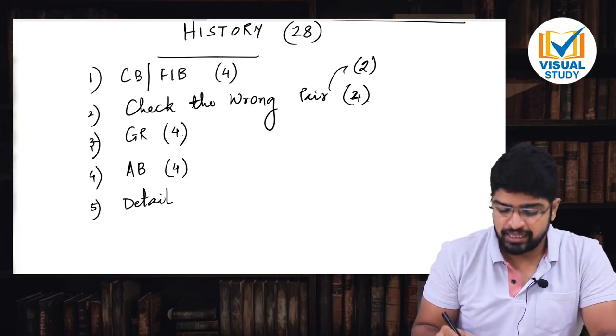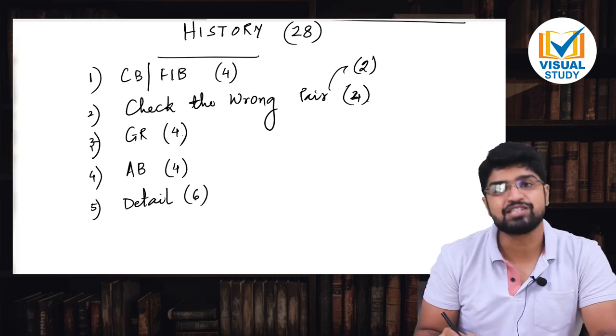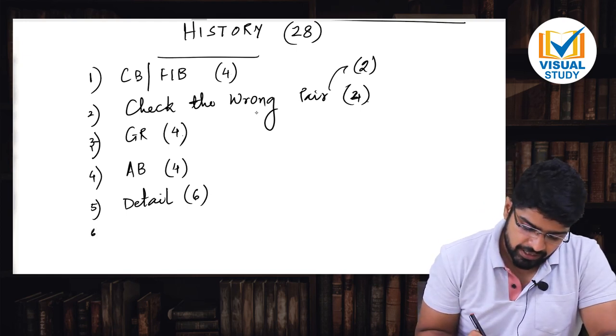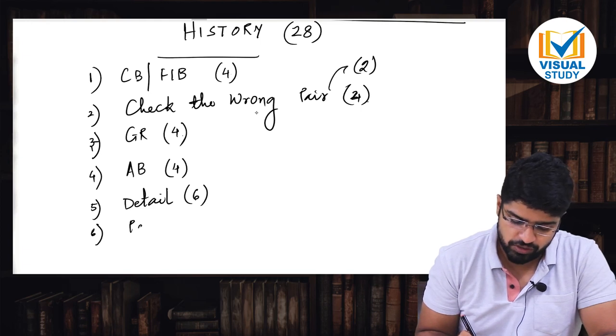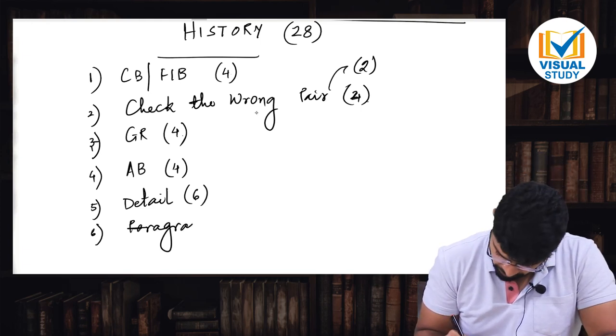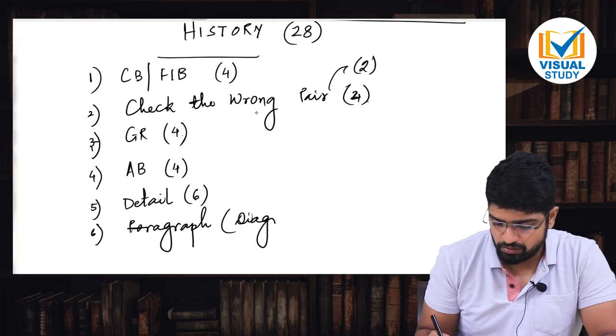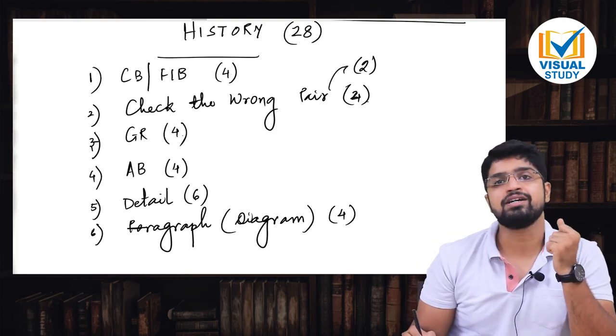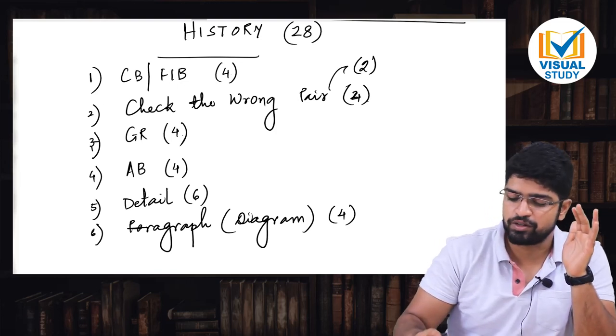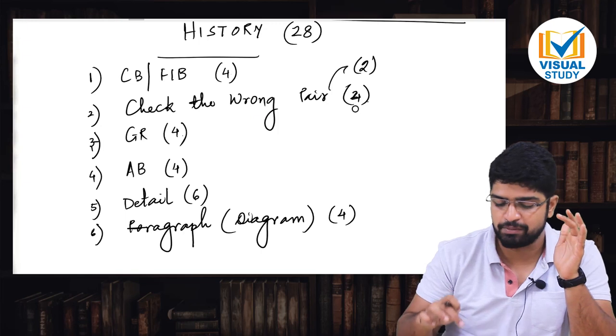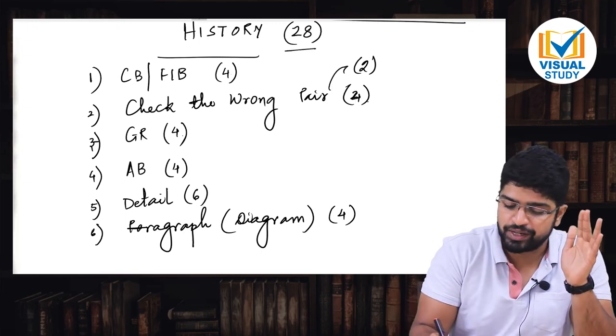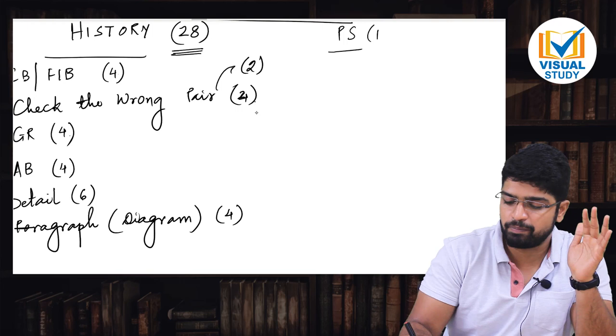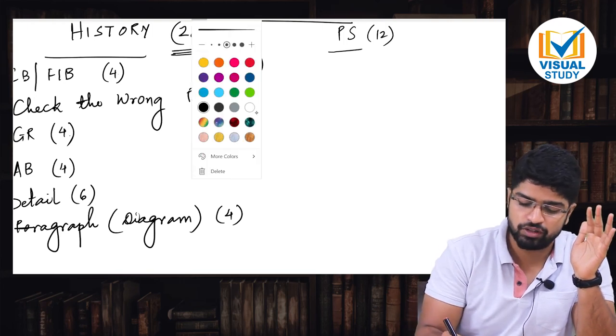Number fourth is answer the following in brief, total for 4 marks, 2 questions rahenge. So 4 plus 2 is 6, plus 4 is 10, plus 4 is 14, plus 4 is 18. Abhi bachte 10 marks. Next one, detail question hai. This detail question comes in the paper total for 6 marks again. So 18 plus 6 is 24. And then there will be something called as paragraph based question or something also called as diagram based question. And this comes for a total of 4 marks again. So aise bante aapke 28 marks for history part.